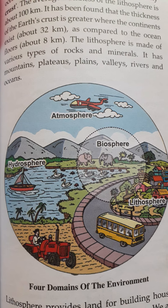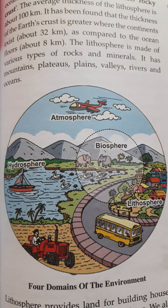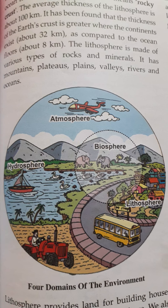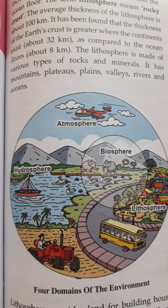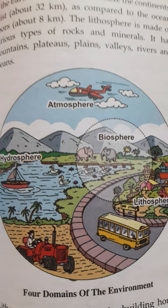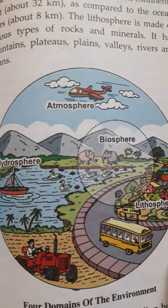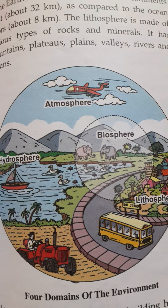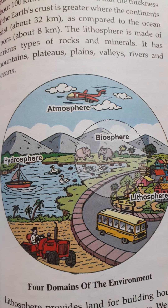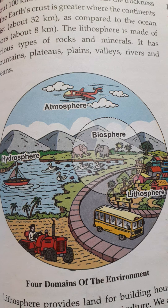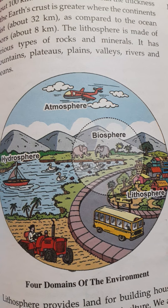Earth is also known as the watery planet. Water supports all forms of life on earth and is useful in many ways. We use freshwater for domestic purposes, drinking, agriculture, and industrial uses. We even generate electricity from it — hydroelectric plants are built on rivers. We are also building national waterways, similar to national highways, as a means of transport.